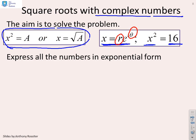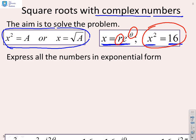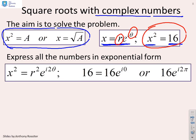The next thing is to express all numbers in the equation in their exponential form. We have x squared, which is r squared e to the i two theta — that's where de Moivre's theorem comes in. Similarly, I can write 16 as 16 e to the i zero, because the phase is zero. Or equivalently, and this is really critical, I could write it as 16 e to the i two pi, or indeed 16 e to the i four pi, and so on.